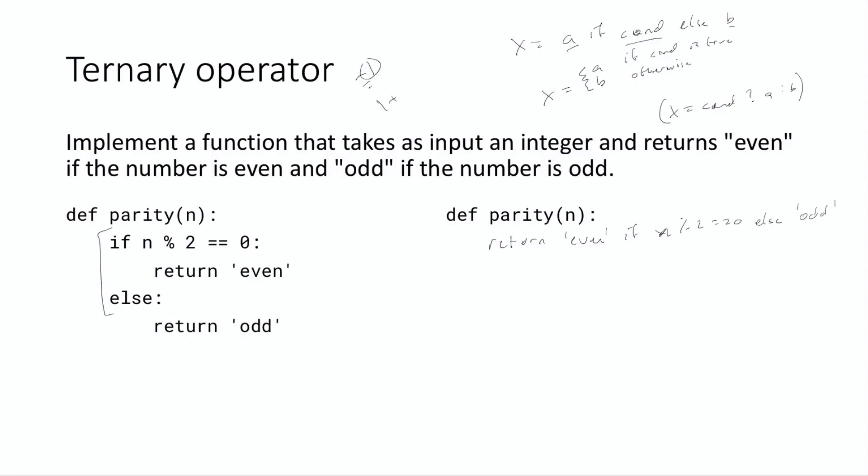And if you do something like one plus two, that plus is a binary operator, because it has two operands, the one and the two. But here we have three operands, a condition and b. There's three of them. And so we call it a ternary operator. And since there's only one well defined operator in a language that takes three parameters like this, we just call it the ternary operator. So don't worry too much about the name.